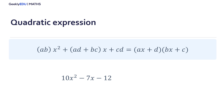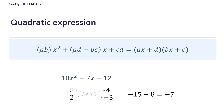Let's see a quick example. If we have this expression we must think of two numbers that multiplied give us 10. We can choose 5 and 2. And now two numbers that multiplied give us minus 12 — you must be careful here with the sign. I am going to choose 4 and minus 3, and when we do the cross multiply we get minus 15 plus 8, and that is equal to minus 7.